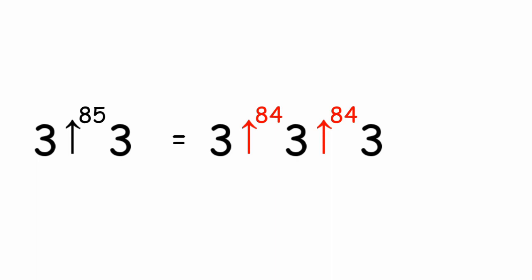We keep breaking them down like this until we get to the single arrow, which is repeated multiplication.